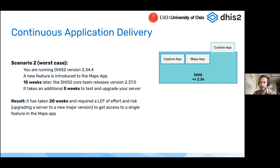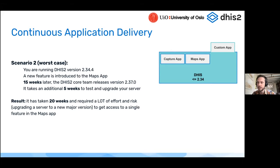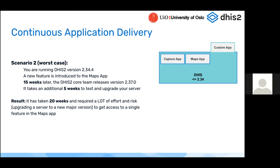Major releases of DHIS2 are only every six months, so you might need to wait six months just for it to be released, then spend a lot of time responsibly upgrading your production instance. Going from 2.34.4 to 2.37.0 is a much more risky and involved task than going from 2.34.4 to 2.34.5 — there may be breaking changes, and it could take another five weeks of testing on a test instance before rolling it out to production. That could be 20 or more weeks of effort just to get access to a single feature in the maps application.